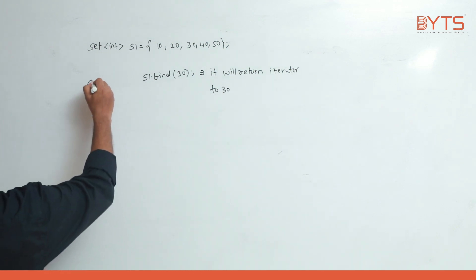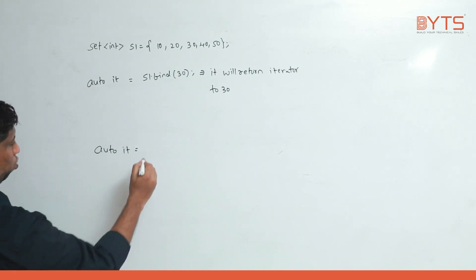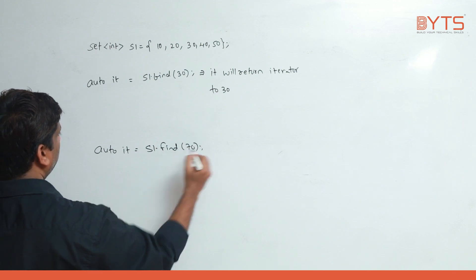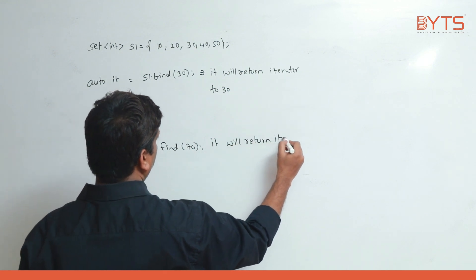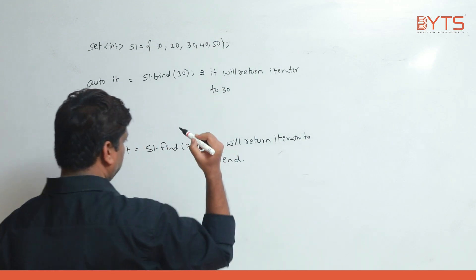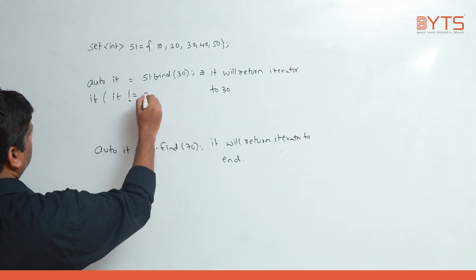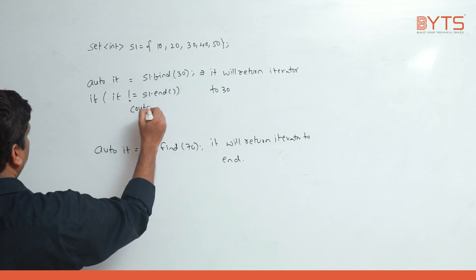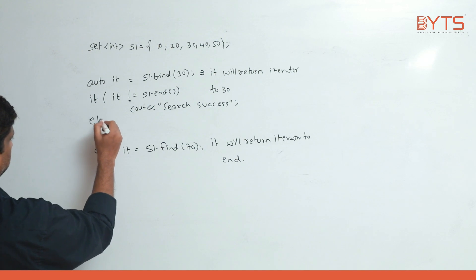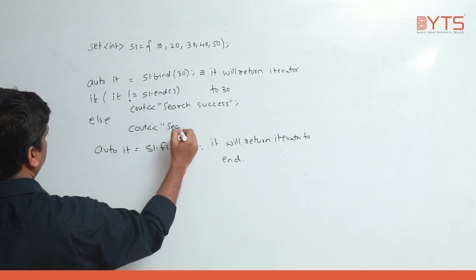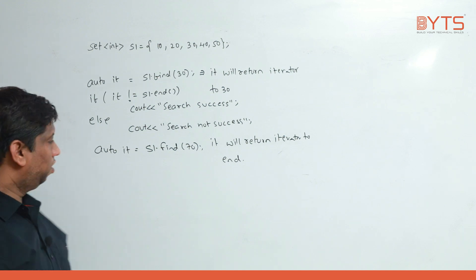auto it = s1.find(70). Now 70 is not there, so find will return iterator to end. So we check: if it != s1.end(), then cout << 'search success', else cout << 'search not success'.